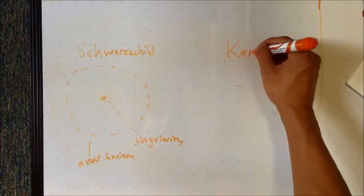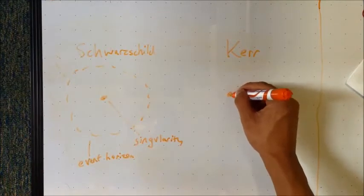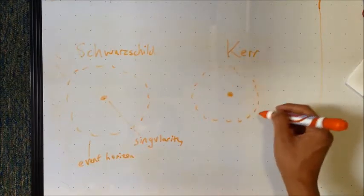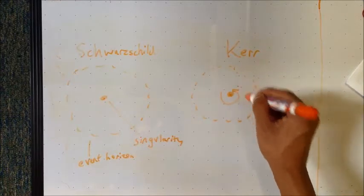The second more common category is known as Kerr. A Kerr black hole rotates due to conservation of angular momentum from the original star. Like a Schwarzschild black hole, it has a singularity and event horizon.